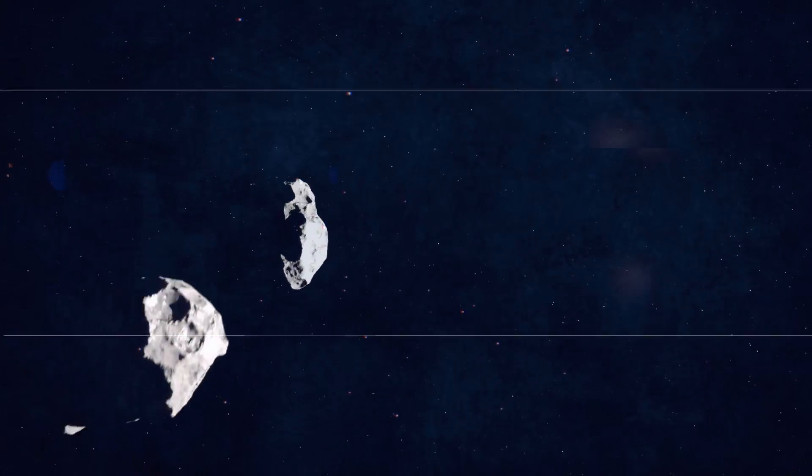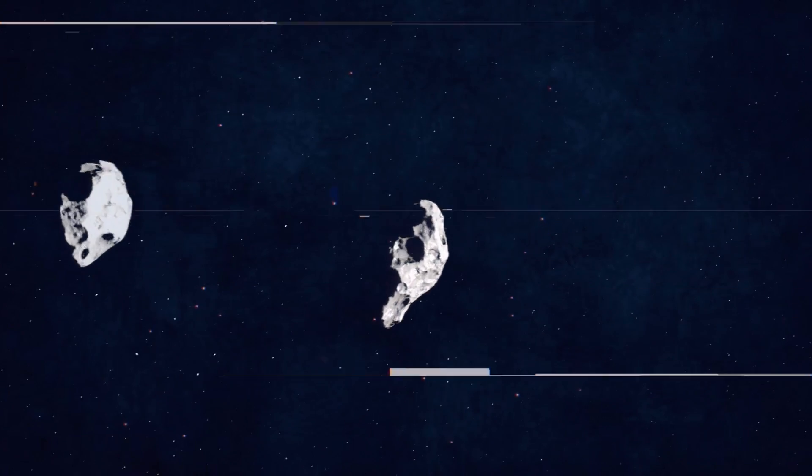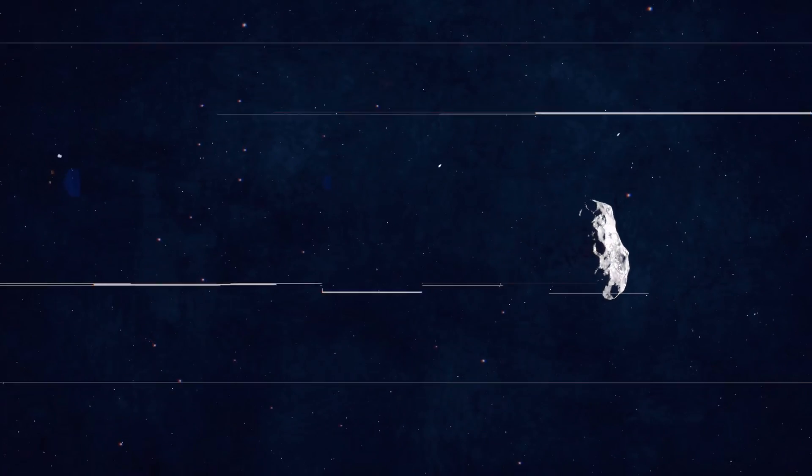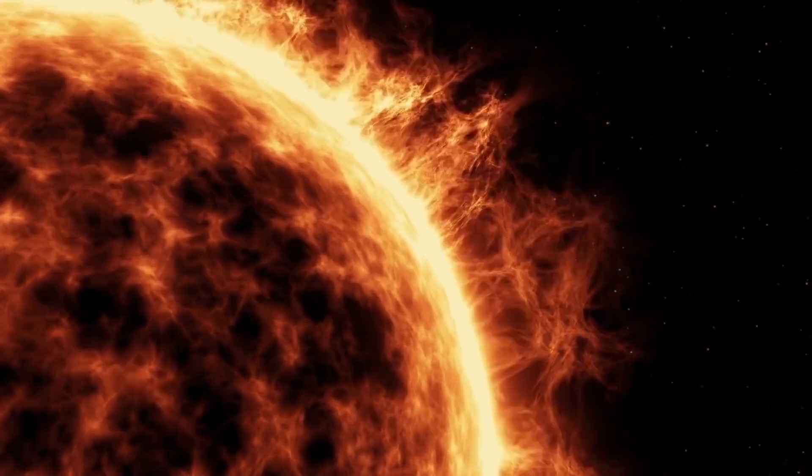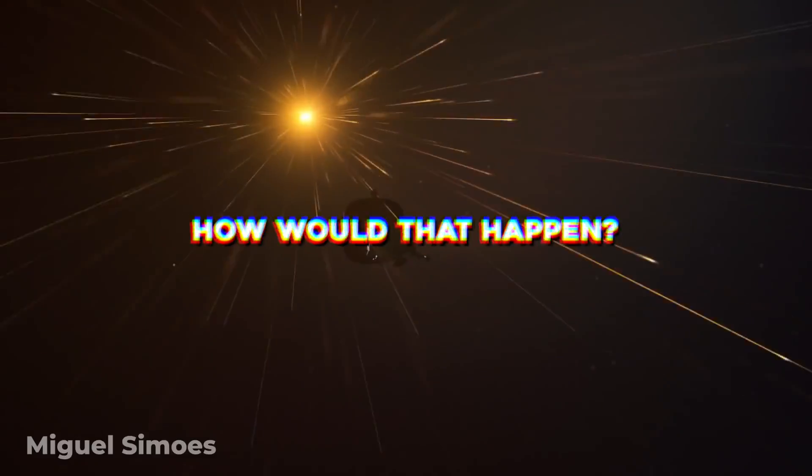But one thing is for sure, even if Earth spends the rest of its eons escaping alien attacks, dodging space rocks, and avoiding a nuclear apocalypse, there will come a day when our own sun will eventually destroy us. So, how would that happen? Let's find out.